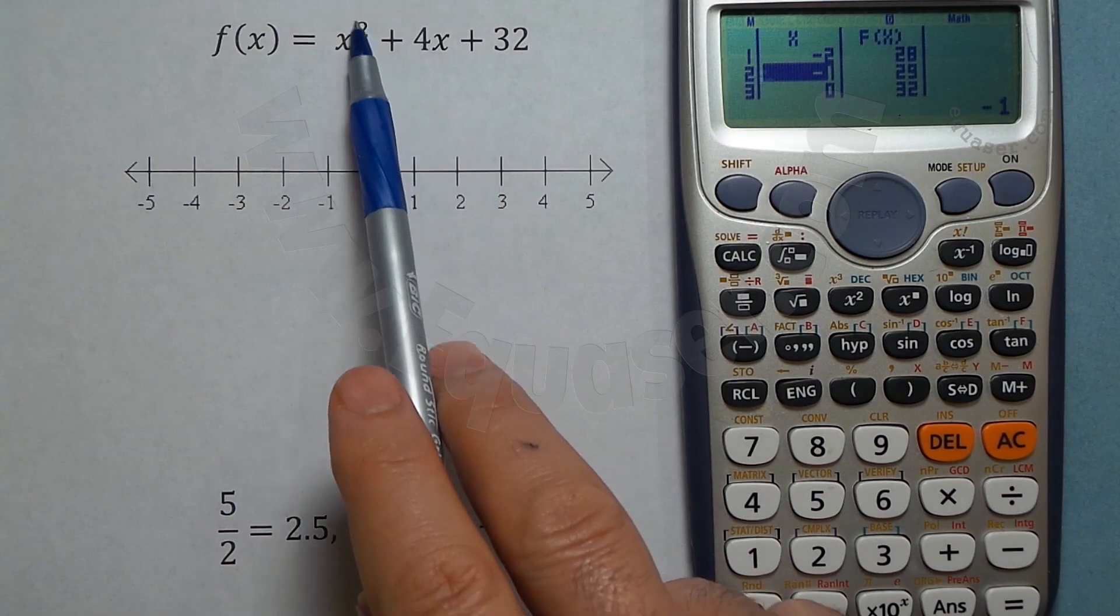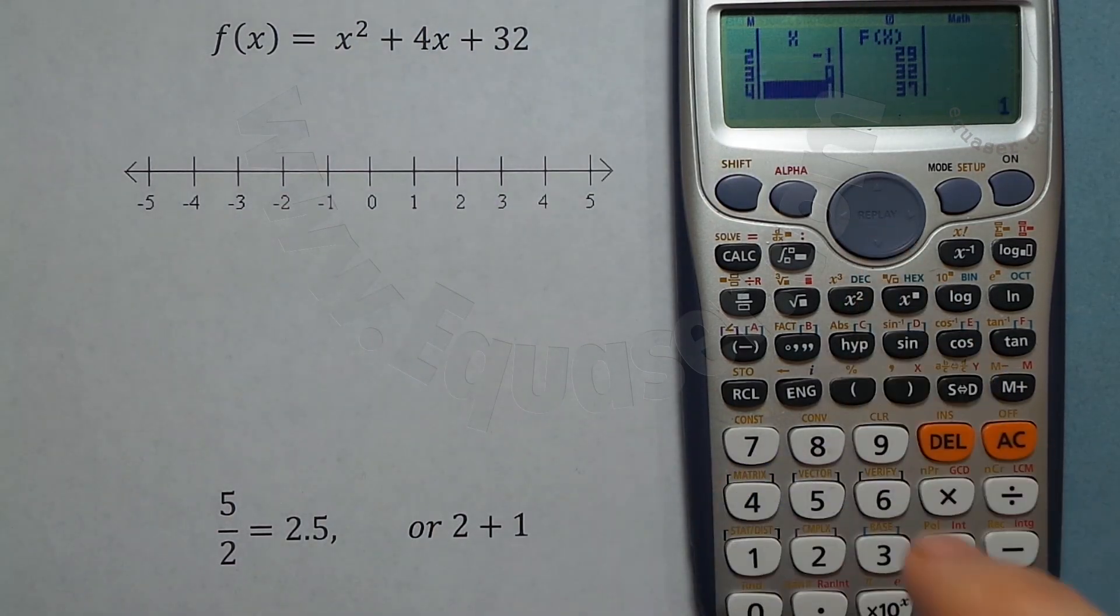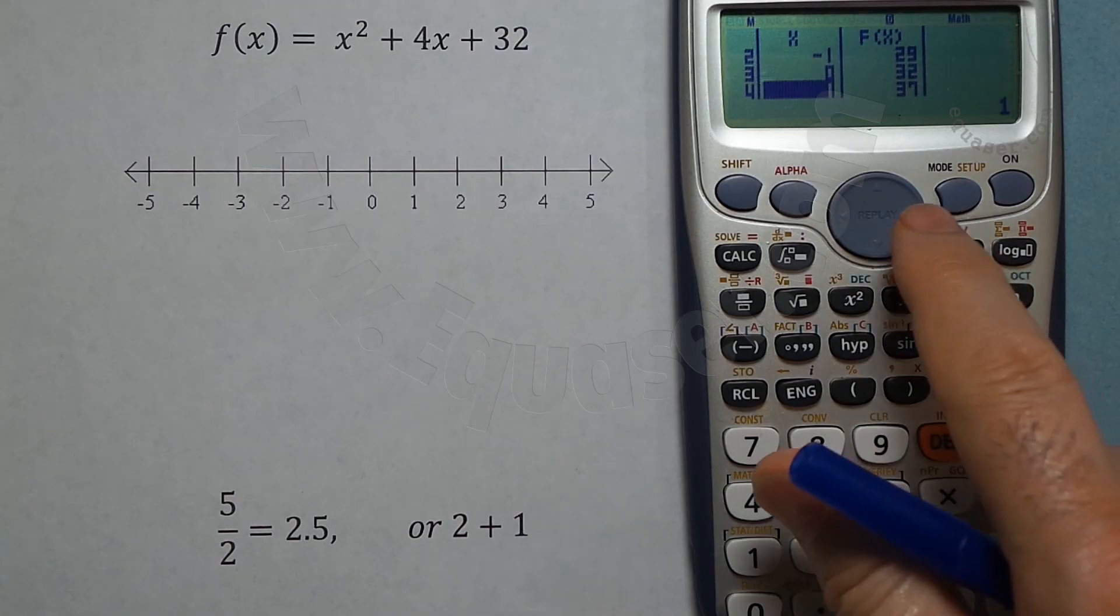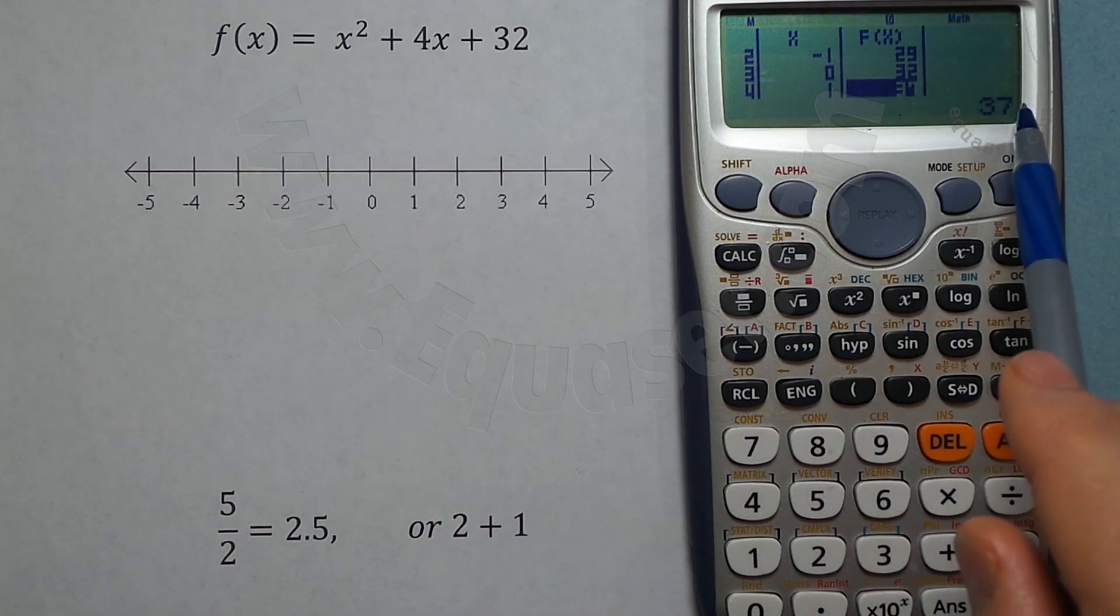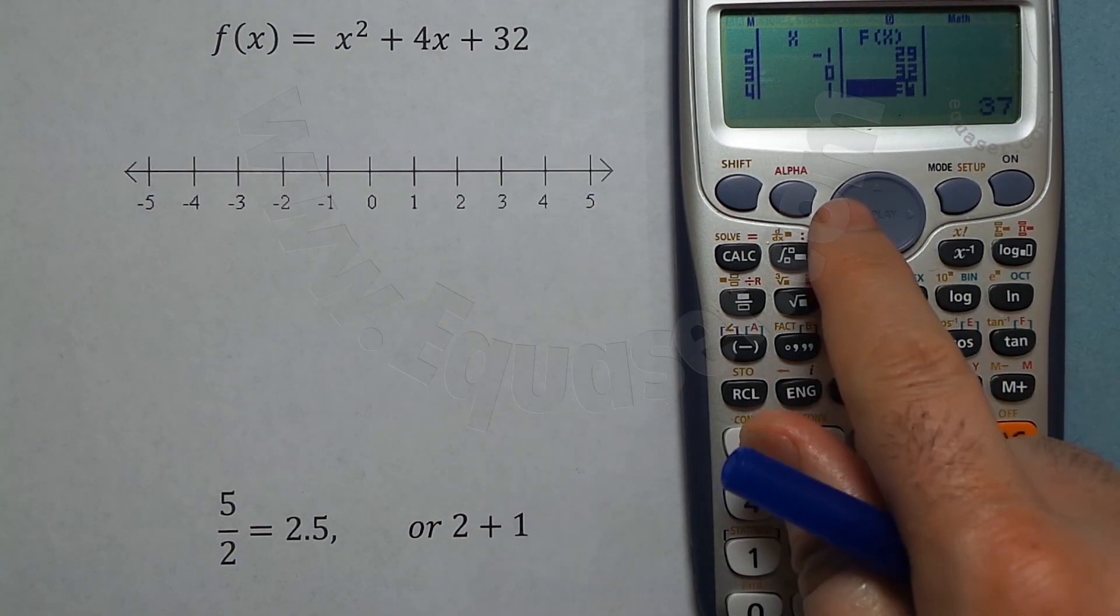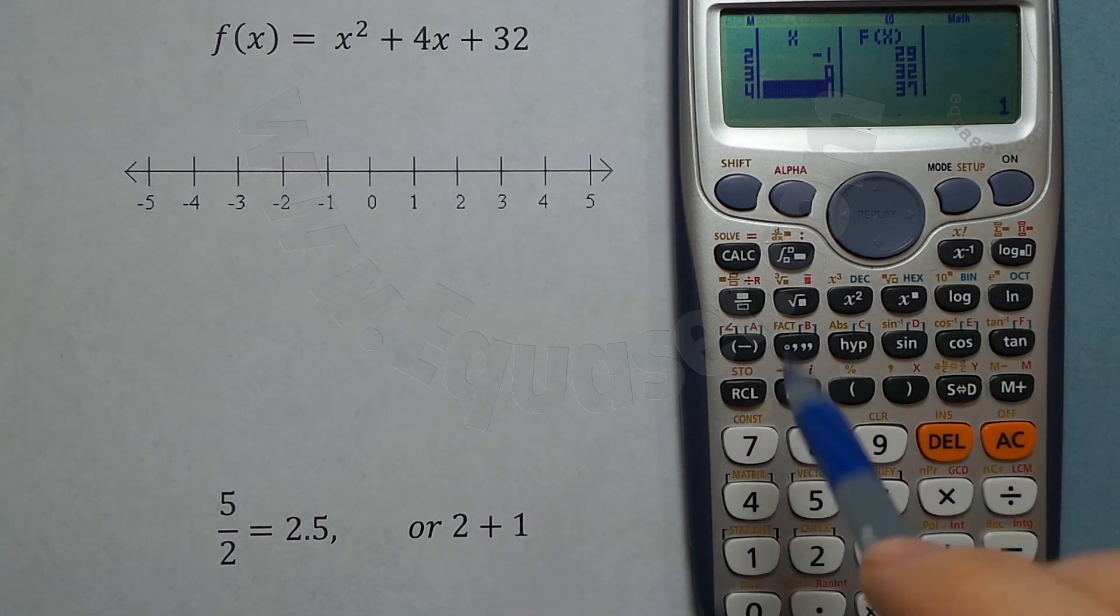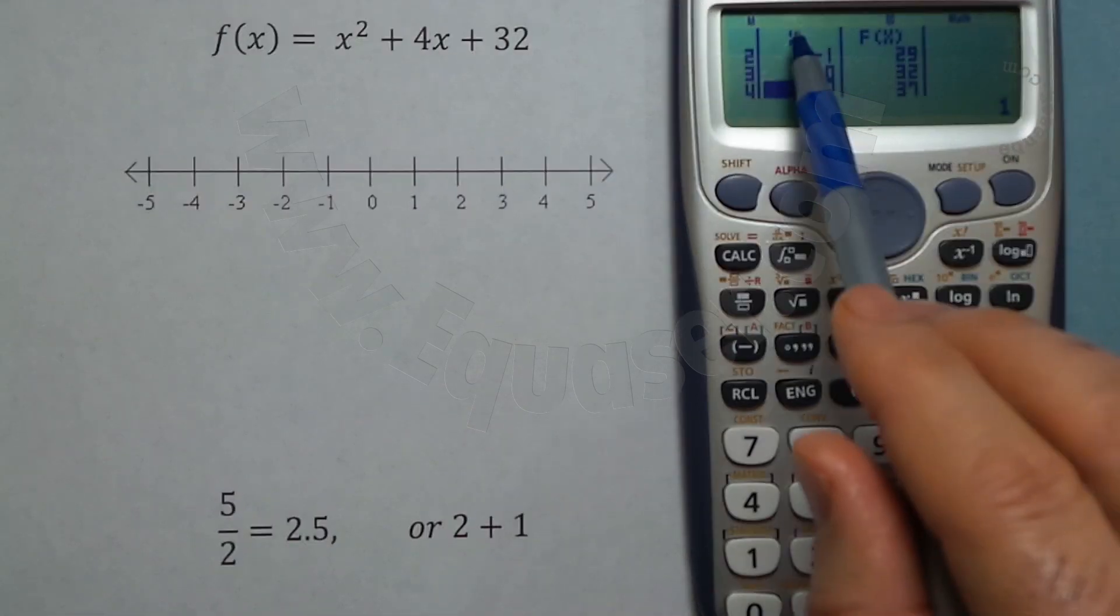When I scroll to this side, I can see it here and here. So we have four values - these are our x's that we selected with the range, and this is the value of the function for those x's.